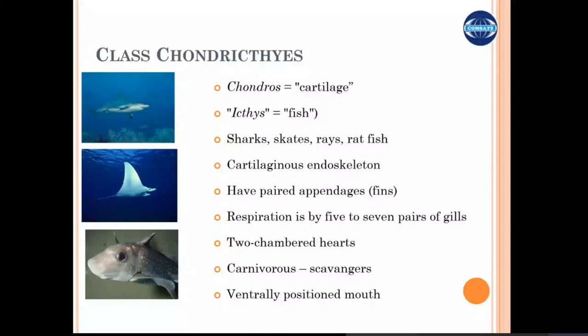Earlier in the non-vertebrates, pharyngeal slits were primarily there for filter feeding. In hagfish and lampreys, we saw that the primary function of pharyngeal slits was getting lost, and they were used only for respiration while feeding happened by other mechanisms — having a tongue provided with teeth. So in gnathostomes, feeding is no longer the function of pharyngeal slits, so they developed a secondary function: respiration.